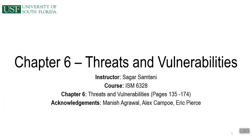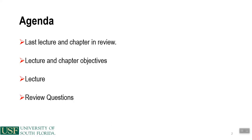Welcome to lecture number six and chapter number six, Threats and Vulnerabilities. You can find this chapter in pages 135 to 174 of your textbook. The agenda is the same as usual: first a review of the last lecture and chapter, then the objectives of this lecture, followed by the lecture content, and concluding with review questions.